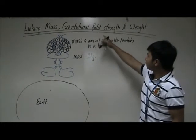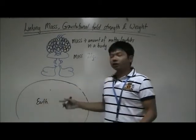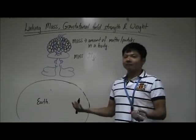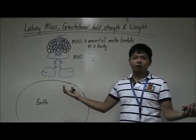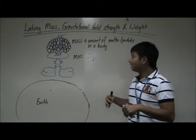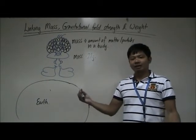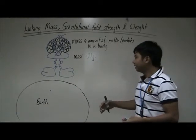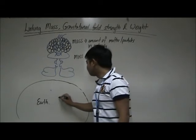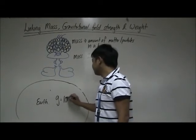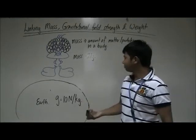Let's move on to gravitational field strength. The Earth, because of its size is big enough, it has the ability to actually attract objects onto its surface. How strong is it in terms of attracting objects onto its surface? It's dependent on the gravitational field strength. The gravitational field strength of the Earth is actually 10 Newton per kg. What does this mean?